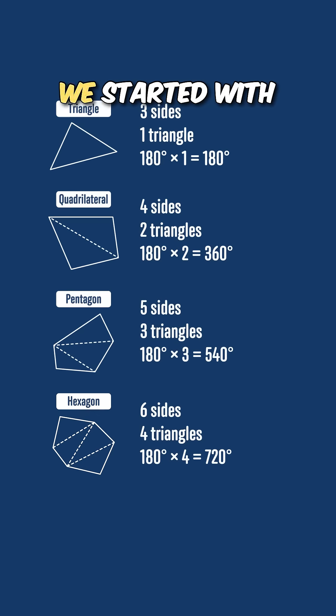So let's recap. We started with the fact that the triangle's interior angles sum to 180 degrees. We can split the quadrilateral with four sides into two triangles, the pentagon with five sides into three triangles, and the hexagon with six sides into four triangles. So can you see the pattern? The number of triangles we can split the polygon into is two fewer than the number of sides that that polygon has.